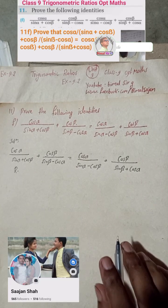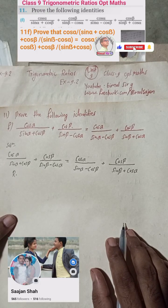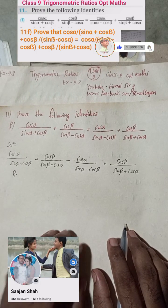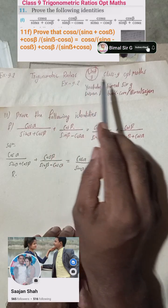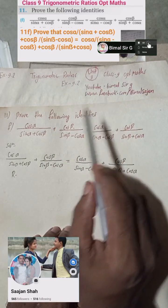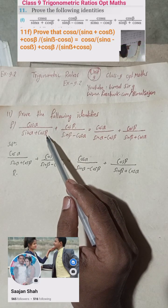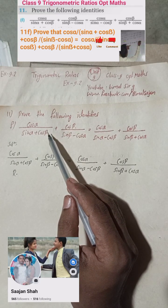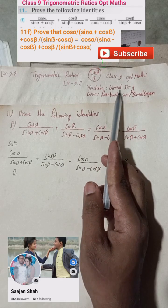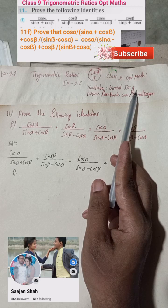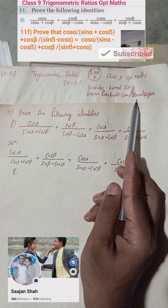Hi everybody, welcome back to Bimalsarji YouTube channel. This is question number 11f of Exercise 9.2, Trigonometric Ratios, Class 9 Optional Mathematics solutions. Solutions for 13ab, 12abc, and 11abcde have already been uploaded. You can check the playlist of Bimalsarji YouTube channel and my Facebook ID: www.facebook.com/bimalsarjan.